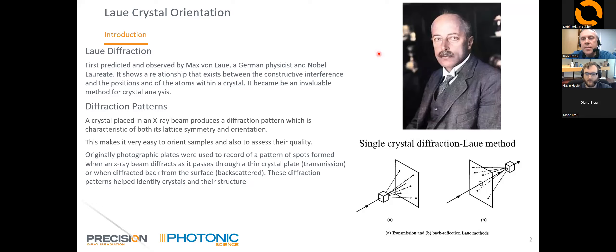He used collimators between the X-ray source and the crystal to ensure the beam was essentially parallel when it hits the crystal. You need to use a polychromatic X-ray source with a range of wavelengths, because the diffraction produced uses the full range of wavelengths from the source. He showed that you could observe spots on a photographic plate from the diffraction — these spots are a superposition of diffraction from sets of planes in the crystal, and their distribution and symmetry relate to the structure and orientation of the crystal.